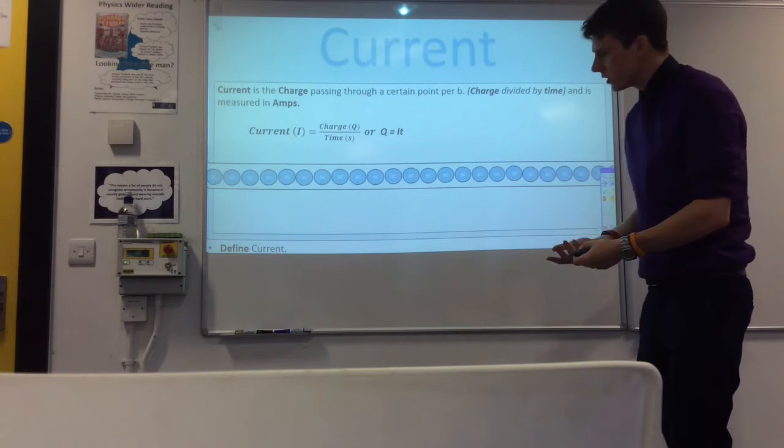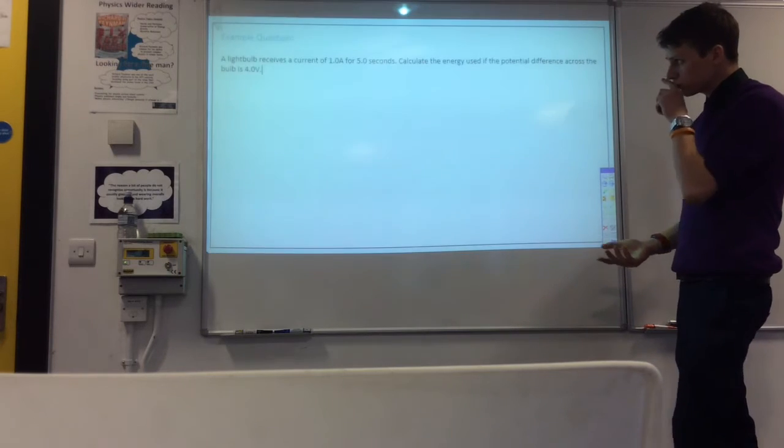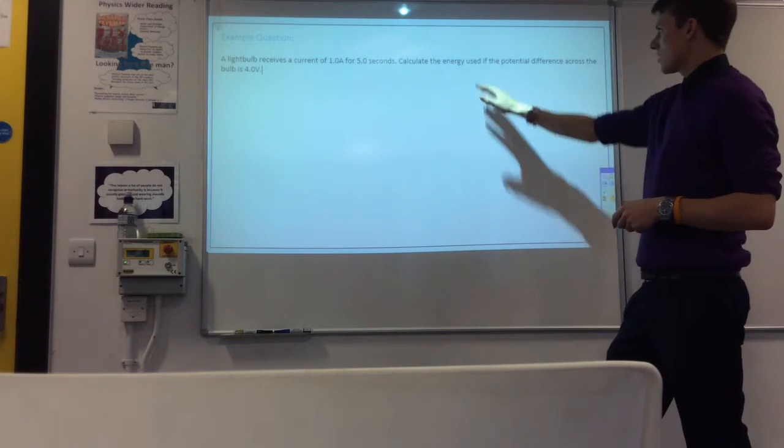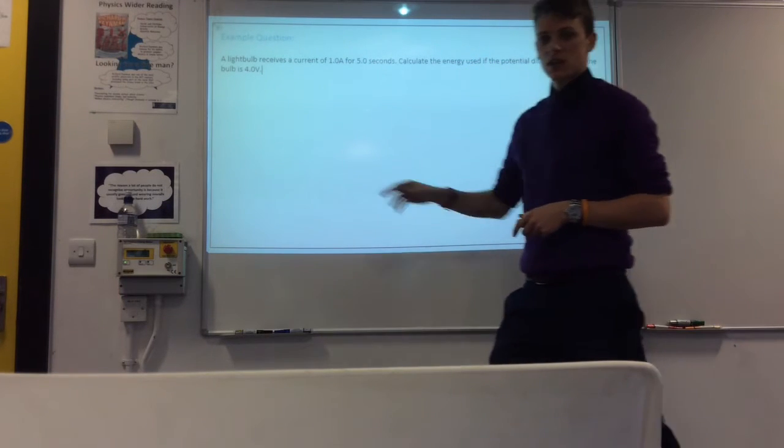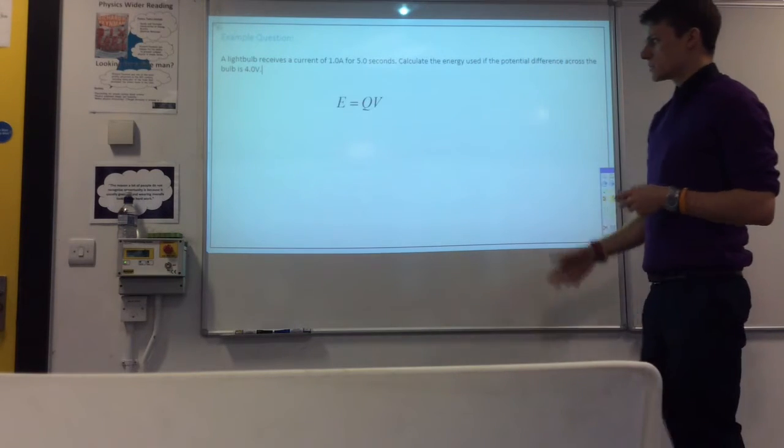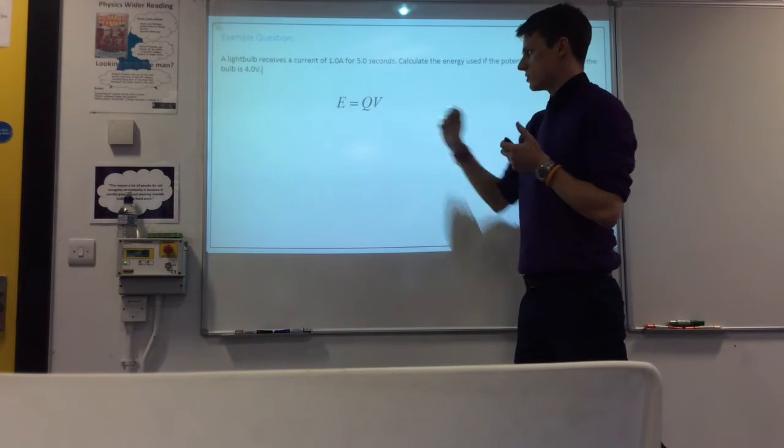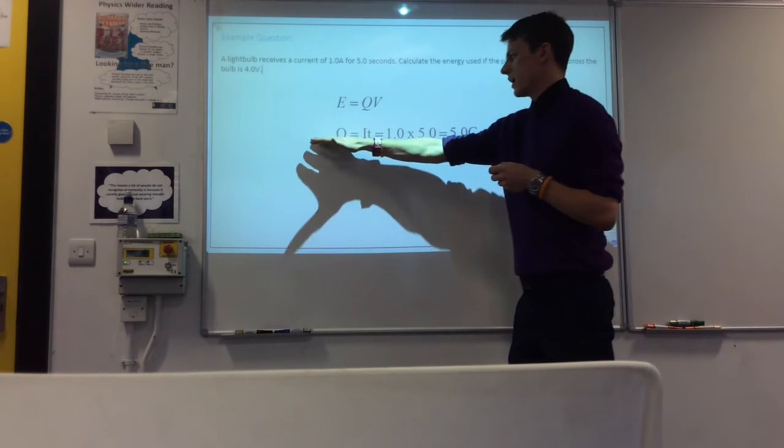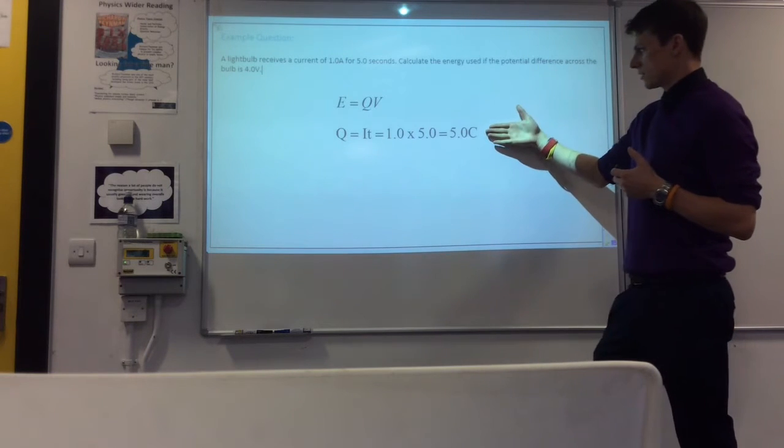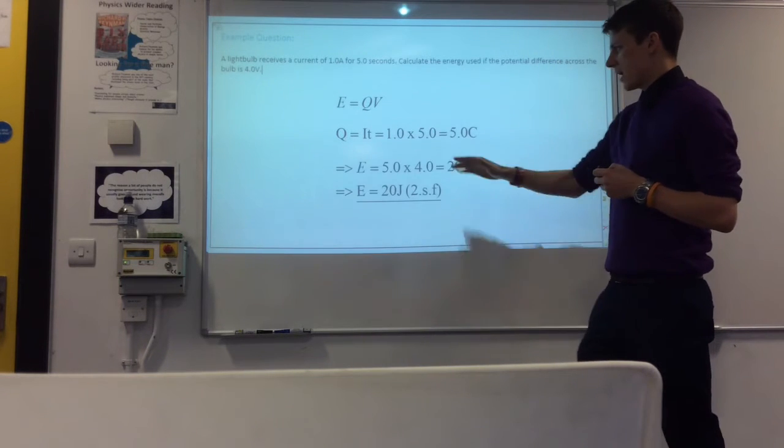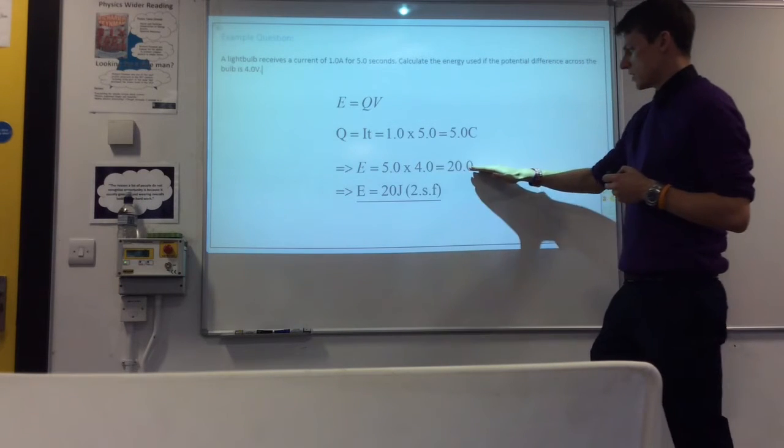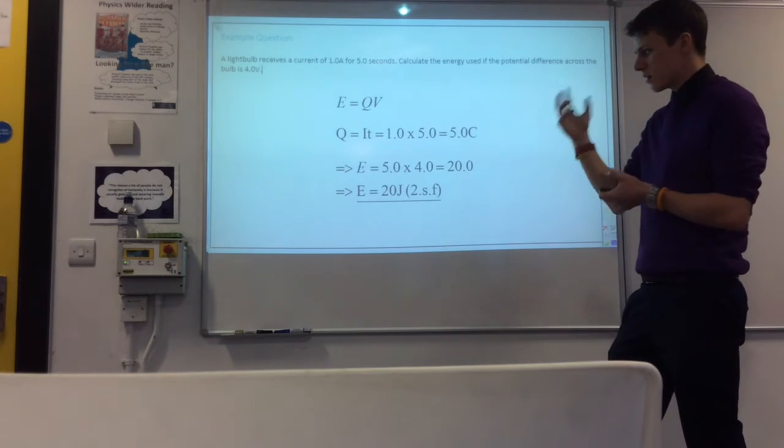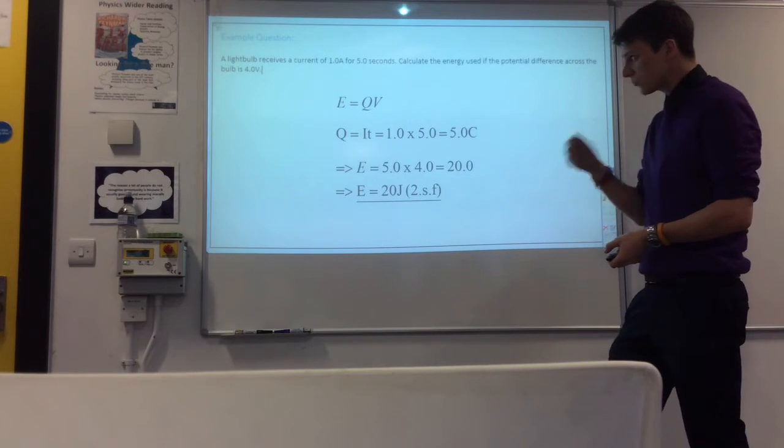So to link that in with what we were talking about before let's have a look at an example. So we've got a light bulb this time it receives a current of one amp for five seconds. Calculate the energy used if the potential difference across it is four volts. So if we want to calculate energy we're going to use this equation here E equals QV but we don't know what Q is. So the first thing we have to do is work out Q using Q equals IT where we get Q is five coulombs. Then we can put that and the potential difference into the equation here and get it would use 20 joules of energy to two significant figures there. So that's how we can put the two together. So that's current.